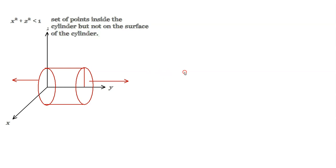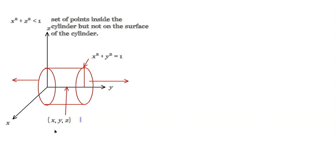Because no y is given, this drum-looking object — a cylinder, basically turned on its side — would continue forever to the left and to the right. Because this is strictly less than 1, this describes the set of points inside the cylinder but not on the surface of the cylinder. On the surface, any combination of x and z would make x squared plus z squared equal to 1, not less than 1. So the interior points are what make the inequality true, and since y is not given, y can be anything — so the object is an infinite cylinder with its boundary not included.